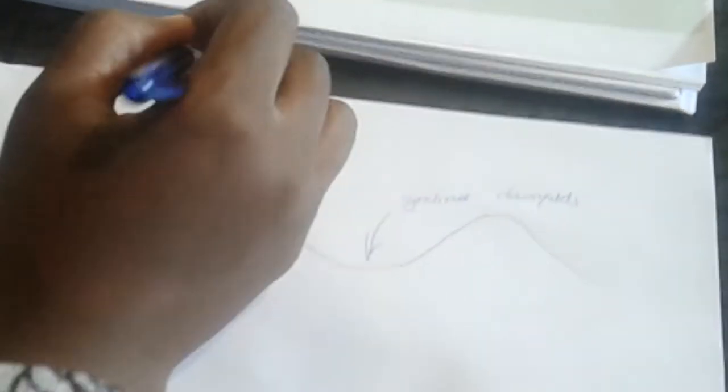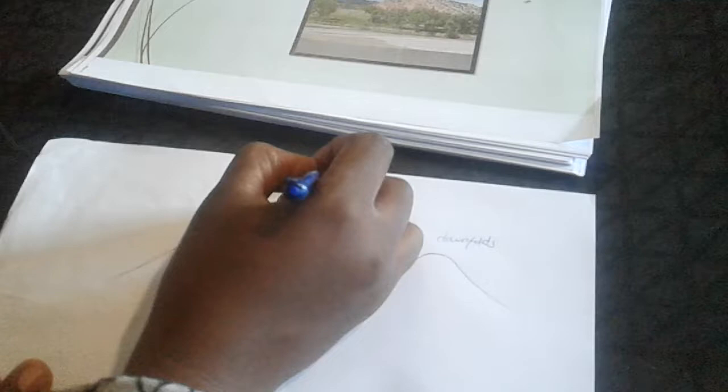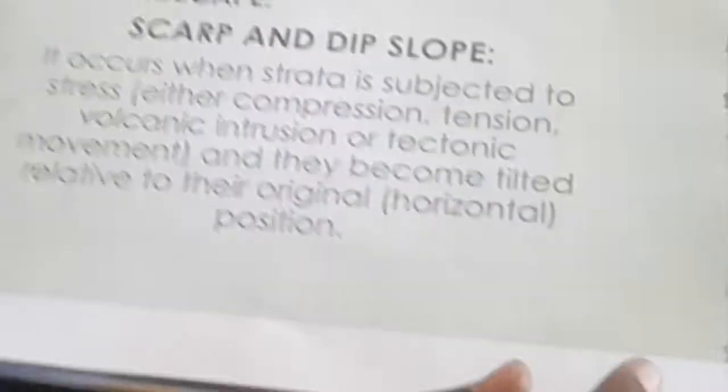These are the upfolds — the anticlines — and these are the downfolds — the synclines. So these tilted landforms, topography associated with inclined strata, are formed as a result of folding. In real life, when you look at these landforms, this diagram is an example of a topography associated with inclined strata.